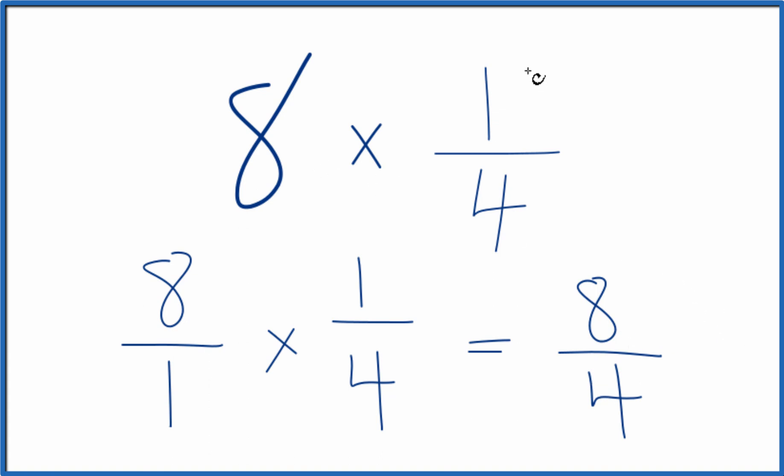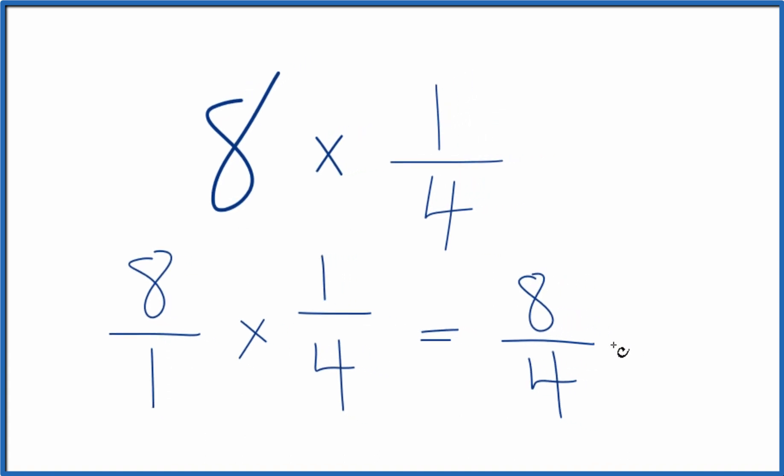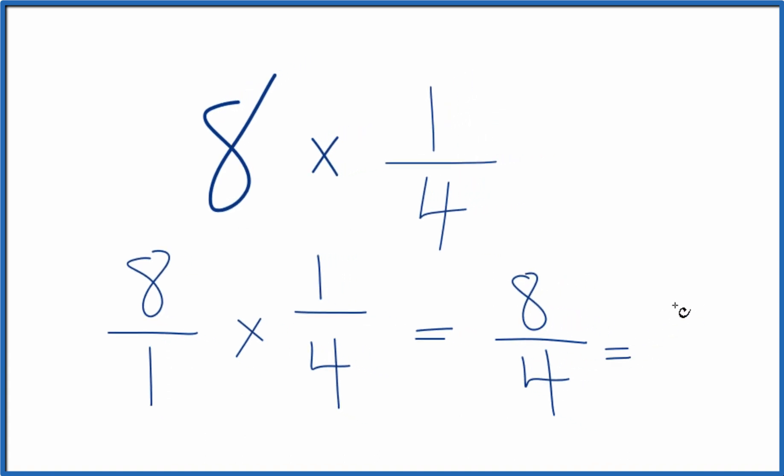So in answer to our question, eight times 1 fourth, that's eight fourths. But we can simplify this because four goes into eight two times. So eight fourths, that's the same as the number two.